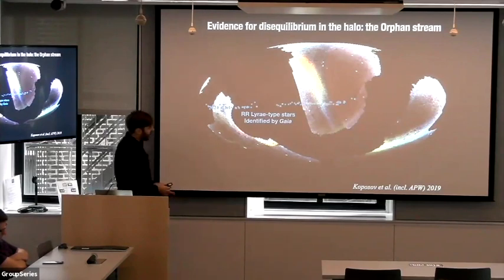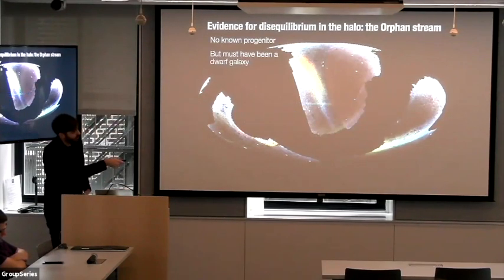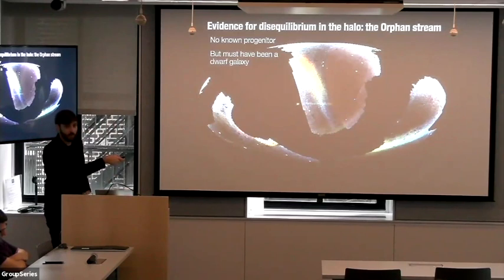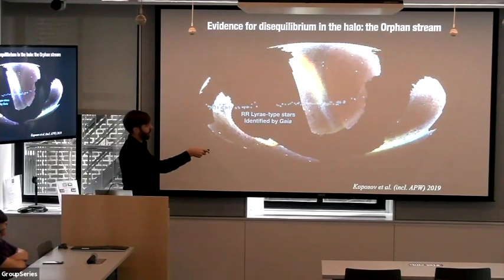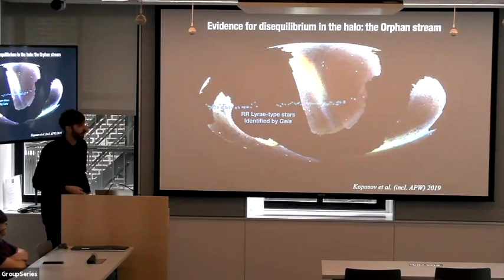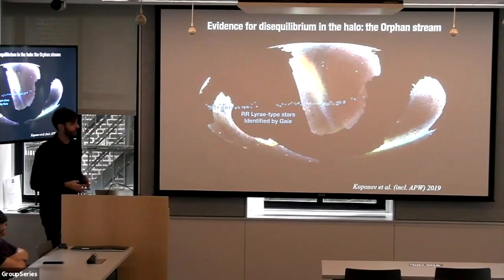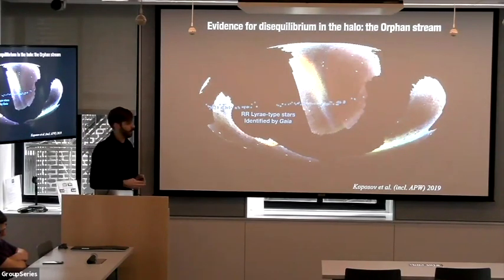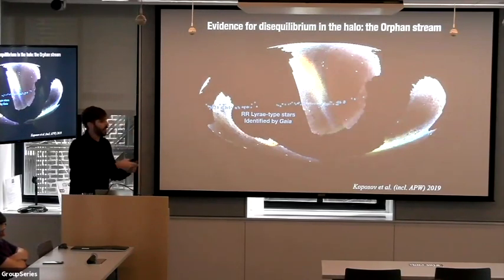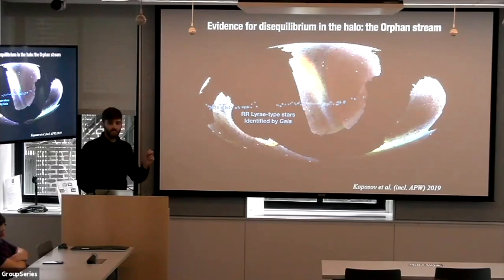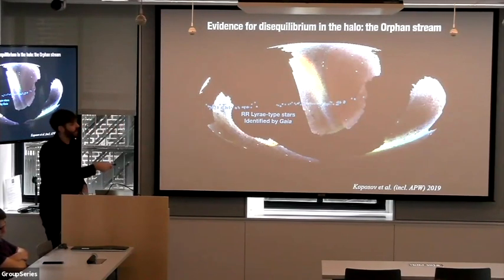Once Gaia DR2 came out, the original part of the stream was only traced to the bottom of the northern footprint. We searched for more stars that could be members of the stream and found RR Lyrae-type pulsating variable stars — typical of dwarf galaxy old stellar populations — that essentially extend the stream pretty far into the southern hemisphere, almost wrapping around the whole sky. These RR Lyrae stars are nice because they're essentially standard candles, like Cepheids — they pulse with a predictable period that scales with luminosity — so we get very accurate distances to all of the individual stars in the stream.